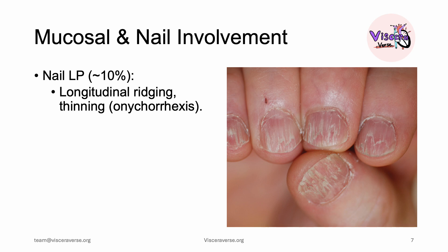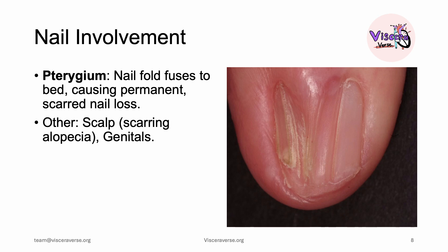Another form of lichen planus is nail lichen planus, forming around 10% of all cases. This manifests as longitudinal ridging and sometimes even thinning of the nails, as you can see here. A more serious manifestation is pterygium, where the nail folds fuse to the nail bed, causing permanent scarred nail loss. Once you see this sign, it is an indication of severe scarring disease. Lichen planus can also involve the scalp, leading to scarring alopecia, and even the genitals, as it affects mucosa.